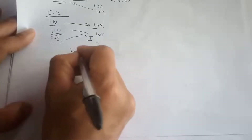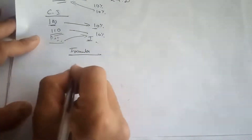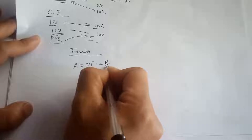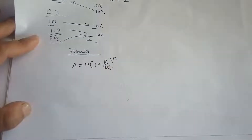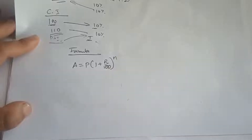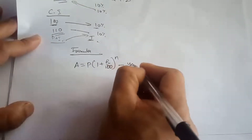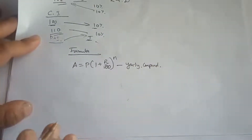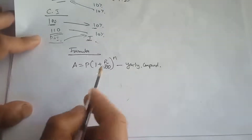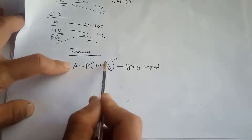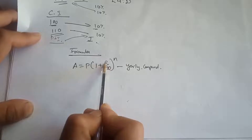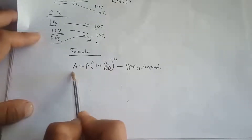So, the formula for compound interest: A equals P multiplied by 1 plus R over 100, raised to N. This is the formula for yearly compounding. Amount equals principal times 1 plus rate of interest over 100, raised to number of years.